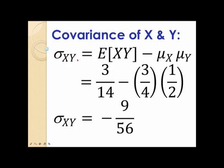Since we now know the values of the expected value of xy, the means of x and y, we are now ready to compute the covariance of x and y. Sigma x, y is equal to the expected value of xy minus the mean of x times the mean of y. This is equal to 3 over 14 minus 3 fourths times 1 half, which gives us the covariance of x, y equal to negative 9 over 56.